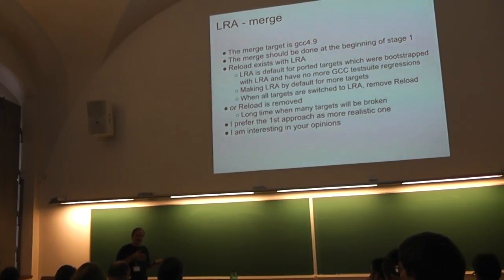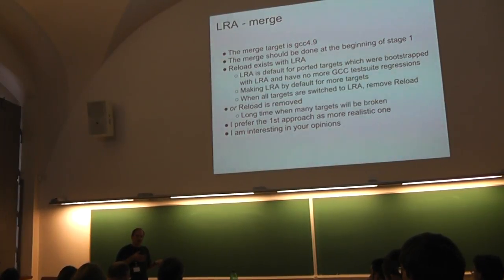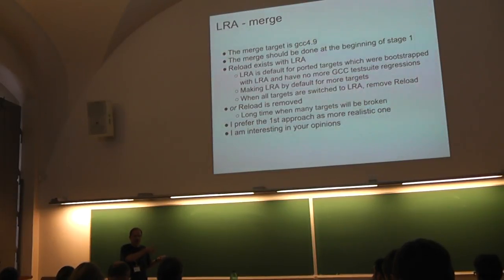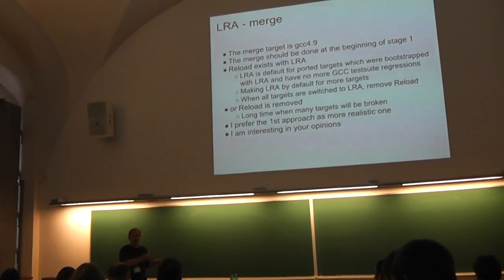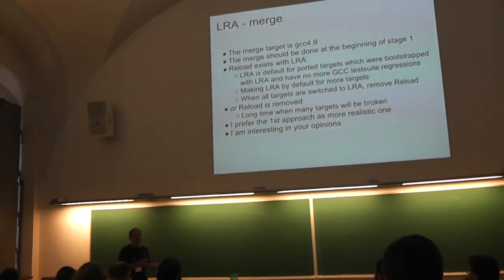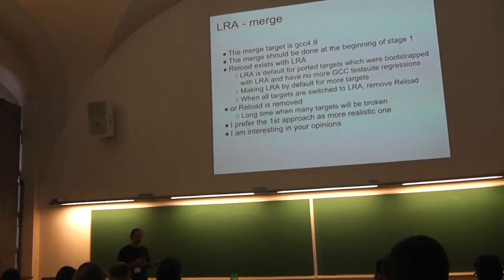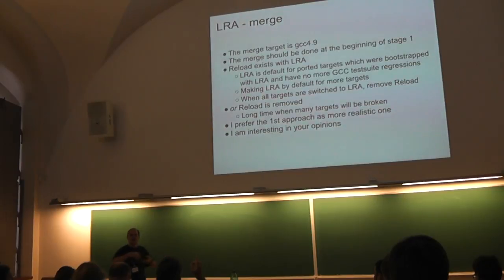I agree — we could choose an alternative during the code selection process already and use this alternative for the local register allocator. It's interesting to see what will happen, but it will speed up the local register allocator a lot because we don't need to check all alternatives.